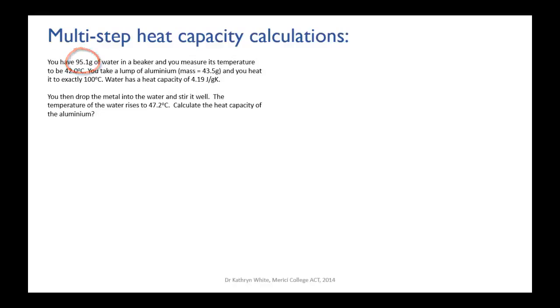You measure its temperature to be 42 degrees Celsius. You take a lump of aluminum with mass equals 43.5 grams and you heat it to exactly 100 degrees Celsius. You're told that water has a heat capacity of 4.19 joules per gram Kelvin. You then drop the metal, the hot metal, into the water, the 95.1 grams of water, and you stir it well.